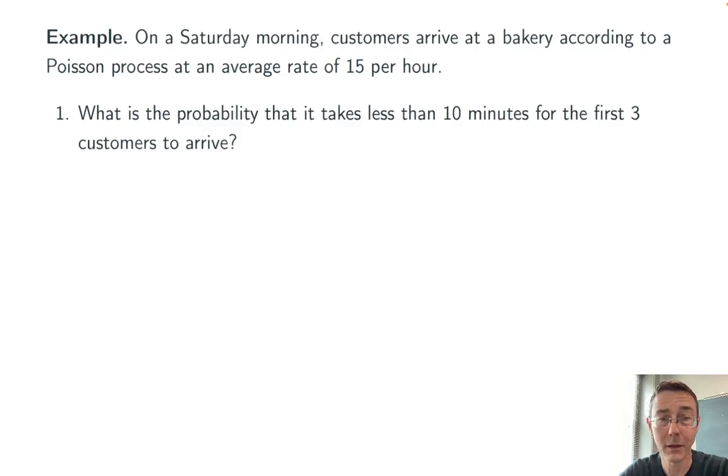Okay, let's do a couple of examples. On a Saturday morning, customers arrive at a bakery according to a Poisson process at an average rate of 15 customers per hour. First of all, what's the probability that it takes less than 10 minutes for the first three customers to arrive?